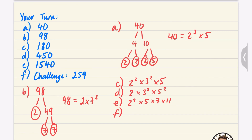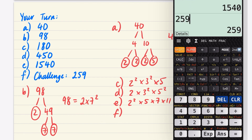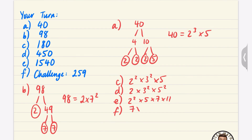The challenge question, 259, is tricky to start a factor tree with. Using the divisibility check for 7: take 25 and subtract the last digit doubled (9 × 2 = 18), giving 25 − 18 = 7, so 259 is divisible by 7. Using the calculator: 259 = 7 × 37, and 37 is also a prime number.